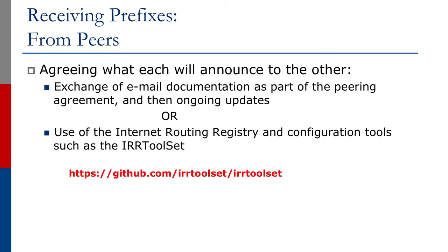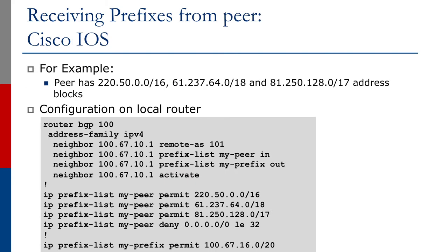An example of how to receive prefixes from a peer is shown on your screen using Cisco IOS. As you can see, the peer has prefixes 220.50.0.0/16, 61.237.64.0/18, and 81.250.128.0/17. On your local router, you would create a prefix list called "my peer" and permit these prefixes in the prefix list and deny everything else.